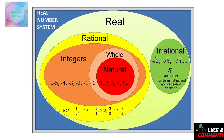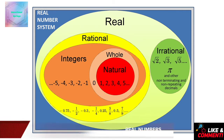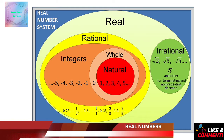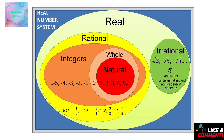Let us look at the slide on your screen. As we discussed on the board, the slide shows that at the inner circle we have natural numbers. Those natural numbers with zero together form whole numbers. Whole numbers along with negative numbers form integers. Integers with fractions form rational numbers. Separately we have irrational numbers, and those rationals and irrationals together are our real numbers.